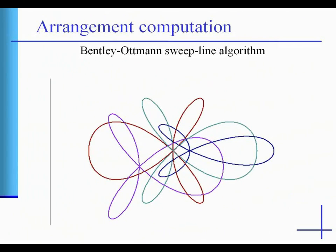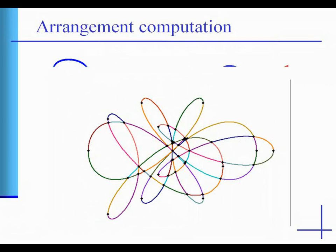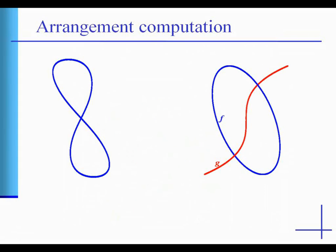To compute algebraic arrangements, we apply the Bentley-Ottmann sweep line algorithm to the case of arbitrary algebraic plane curves. All geometric predicates are reduced to a geometric topological analysis of a single curve and of a pair of curves.